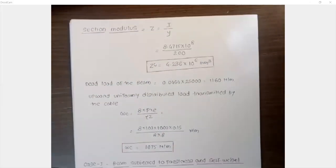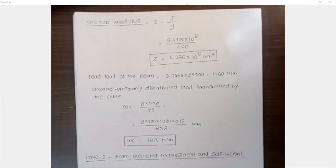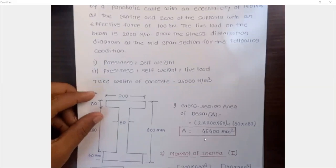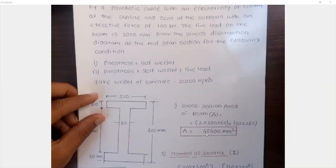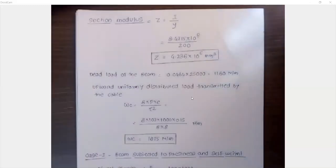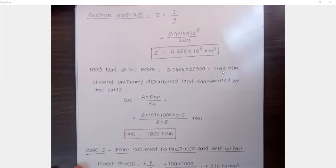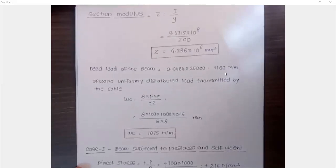Next, we calculate the dead load on the beam. The cross-sectional area is 46,400 mm², which converts to 0.0464 m². Multiplying by the density of concrete (25,000 N/m³), the dead load (self-weight) of the beam is 1,160 Newton per meter.